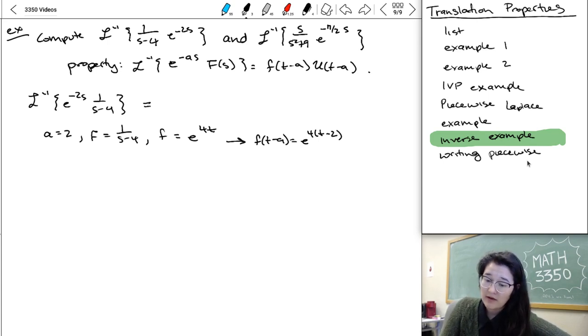So this inverse Laplace is gonna be F of T minus A, e to four times T minus two, times U of T minus A, U of T minus two. And at this point, we did it. We computed that inverse Laplace transform.